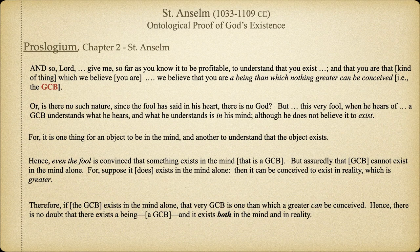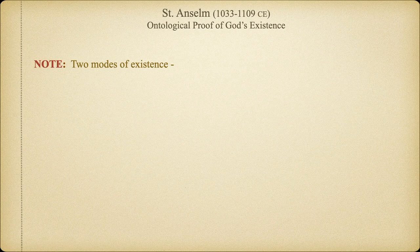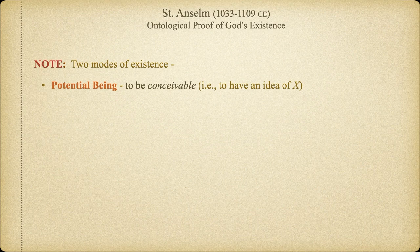The first part of Anselm's argument turns on a distinction between what medievalists would have called modes of being or modes of existence. Potential existence refers to anything that's possible — anything that is conceivable — meaning anything that does not entail a contradiction. For example, if I try to conceive of a four-sided triangle, I fail, because both ideas are canceled out; they're mutually exclusive. So we can think of the realm of potentiality as including anything that is conceivable. Dragons are conceivable. Unicorns are conceivable, as are apples and bridges. If you can formulate the idea in your mind, that thing exists in the realm of potentiality — it is a possible being.